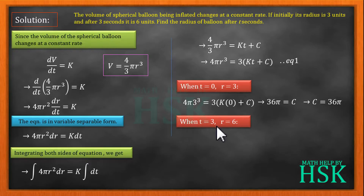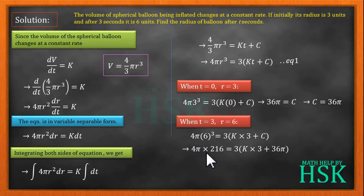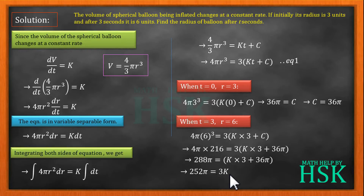The second condition: when t = 3, r = 6. Placing these values in equation one: 4π(6³) = 3(k·3 + c). Since 6³ = 216, we get 4π·216 = 3(3k + 36π). Cancelling 3 with 216 gives 72, so 4·72π = 3(3k + 36π), i.e., 288π = 9k + 108π. This gives 252π = 9k... wait, 288π − 108π = 180π, so 3k = 252π, meaning k = 84π.